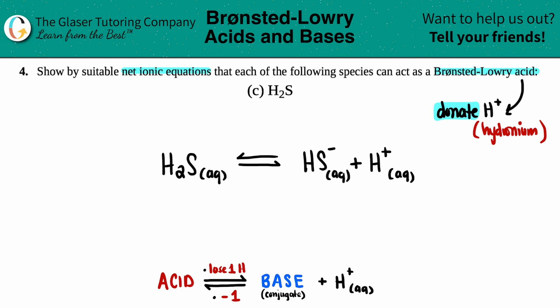And that's it. We are done. This is your balanced net ionic equation to show that H2S is a Bronsted-Lowry acid.